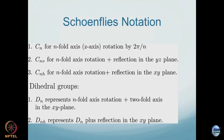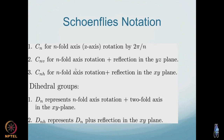C_n denotes an n-fold z-axis rotation by 2π/n. C_nv — for example C_2v — represents an n-fold rotation plus reflection in the yz-plane. C_nh is an n-fold axis rotation plus reflection in the xy-plane.